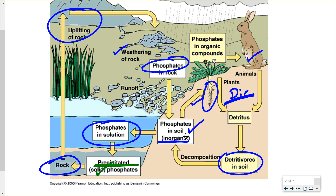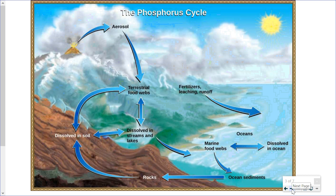There is one exception regarding phosphorus in the atmosphere: volcanic eruptions. Volcanic eruptions spew many things into the atmosphere not normally found there, including phosphorus in the form of an aerosol. However, this would very quickly settle down to the terrestrial environment and to the hydrosphere and would not remain in the atmosphere for very long.